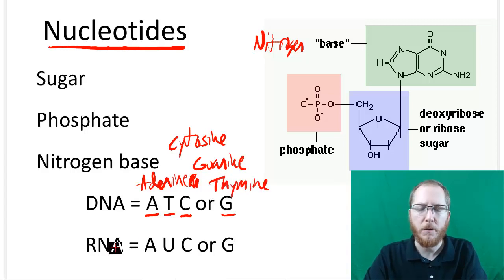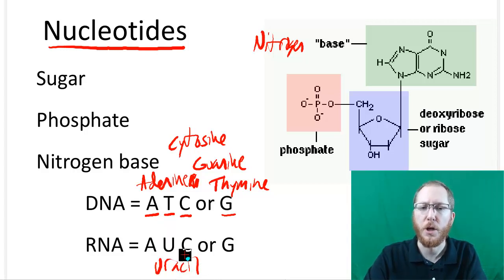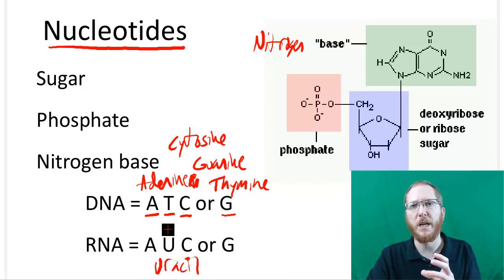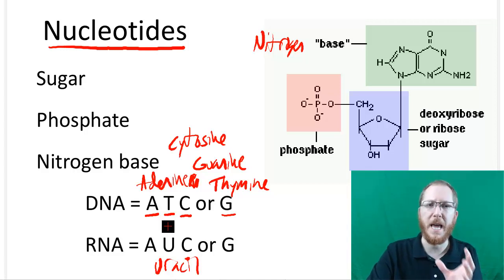Now with RNA, it's a slightly different molecule. One of the differences is it has a different nitrogen base. Instead of thymine, we're going to have uracil. If you see something that contains uracil, you know it's RNA. If you see thymine, you know it's DNA. All the other nitrogen bases are identical - they both have adenine, cytosine, and guanine.